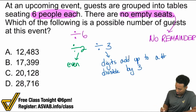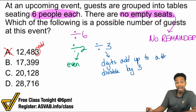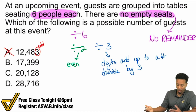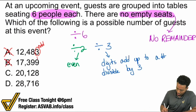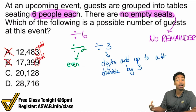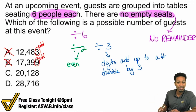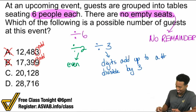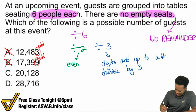So A is automatically wrong because the last digit is odd, which means it's an odd number. B is also incorrect automatically — nine is odd. Remember, odd numbers are not divisible by two. A and B are both gone. Answer choice C ends in an eight, so it is even — we can check that off.